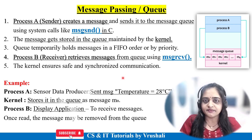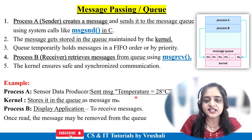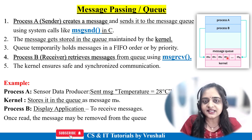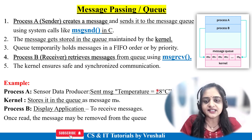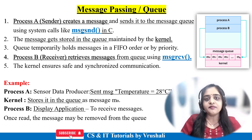Now let's understand message passing with an example. Assume Process A is the sensor data producer. It sends a message to Process B via the queue — for example, temperature equals 28 degrees Celsius. The kernel maintains and manages this queue. Process B retrieves this message and displays it on the dashboard. After retrieving the message, the queue becomes empty. This is called message passing — it maintains efficient communication between processes.